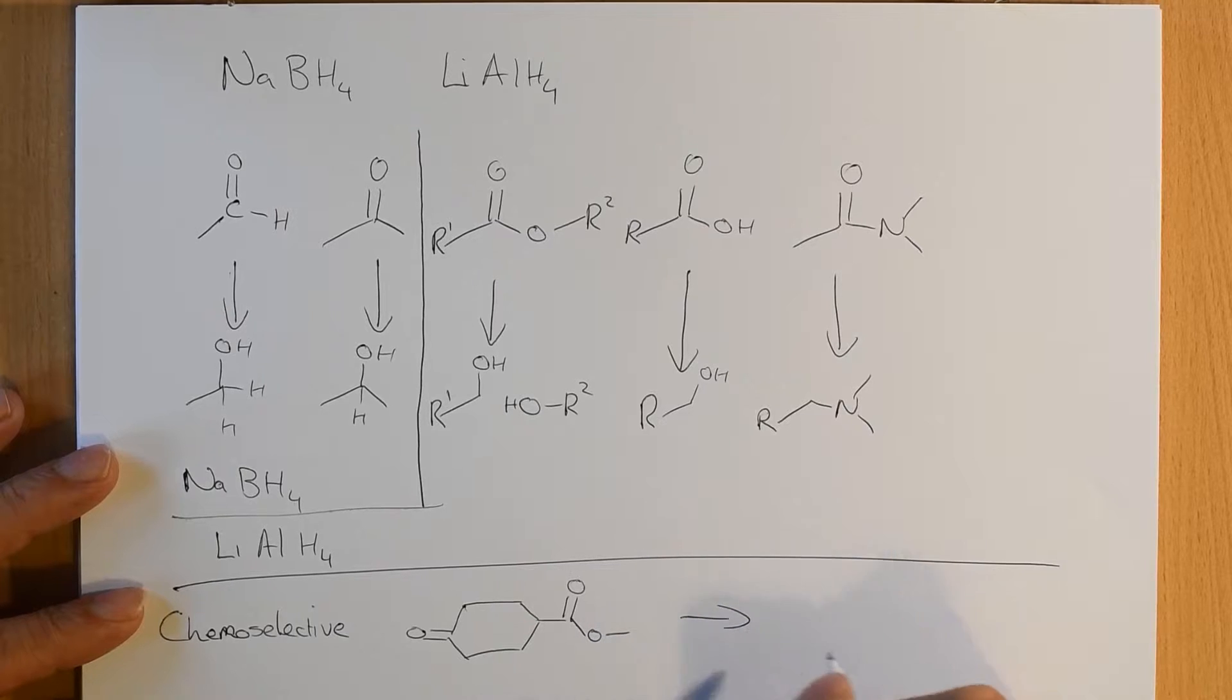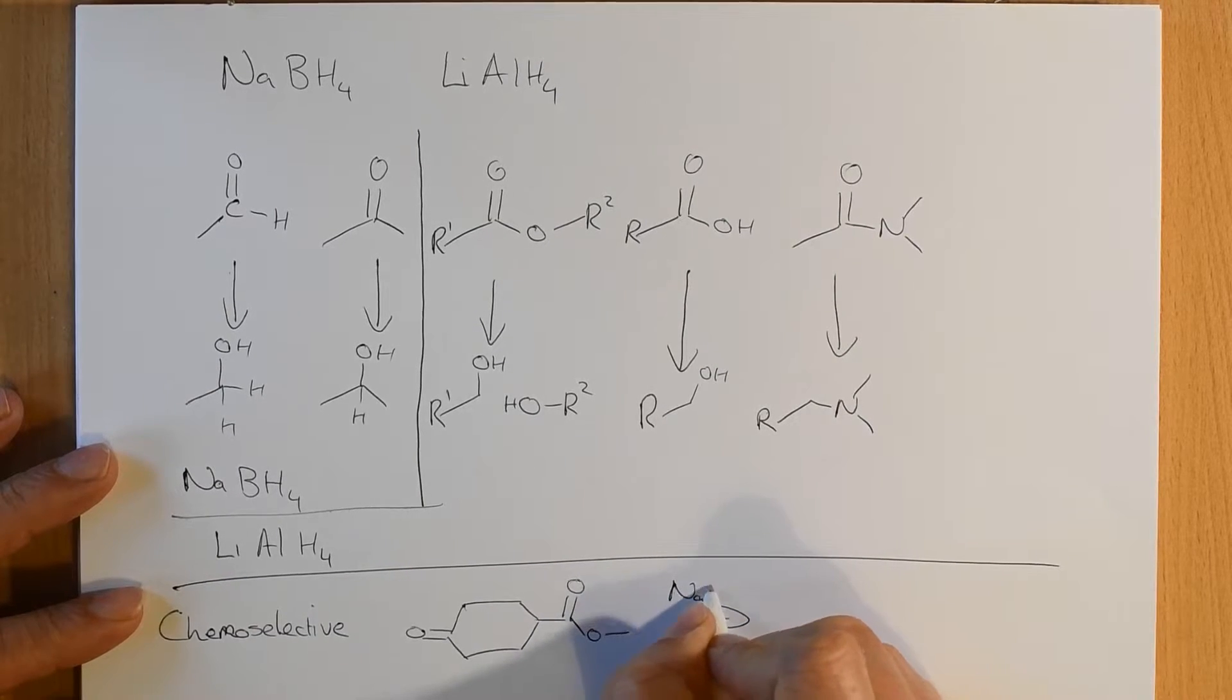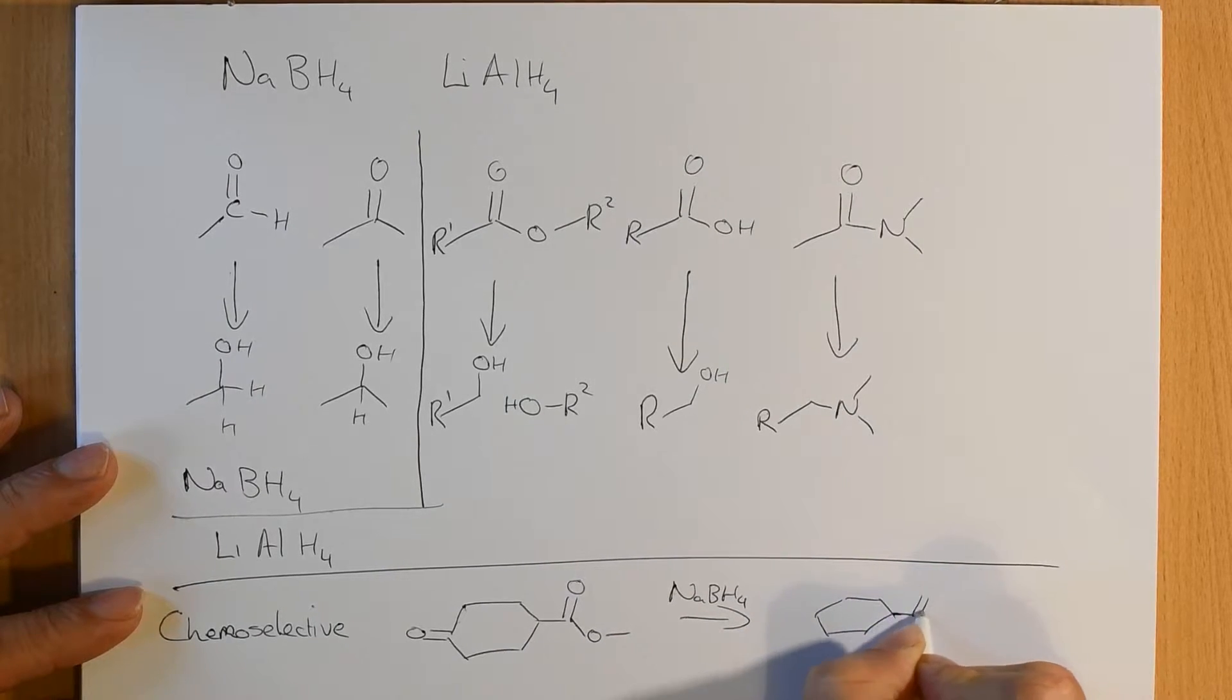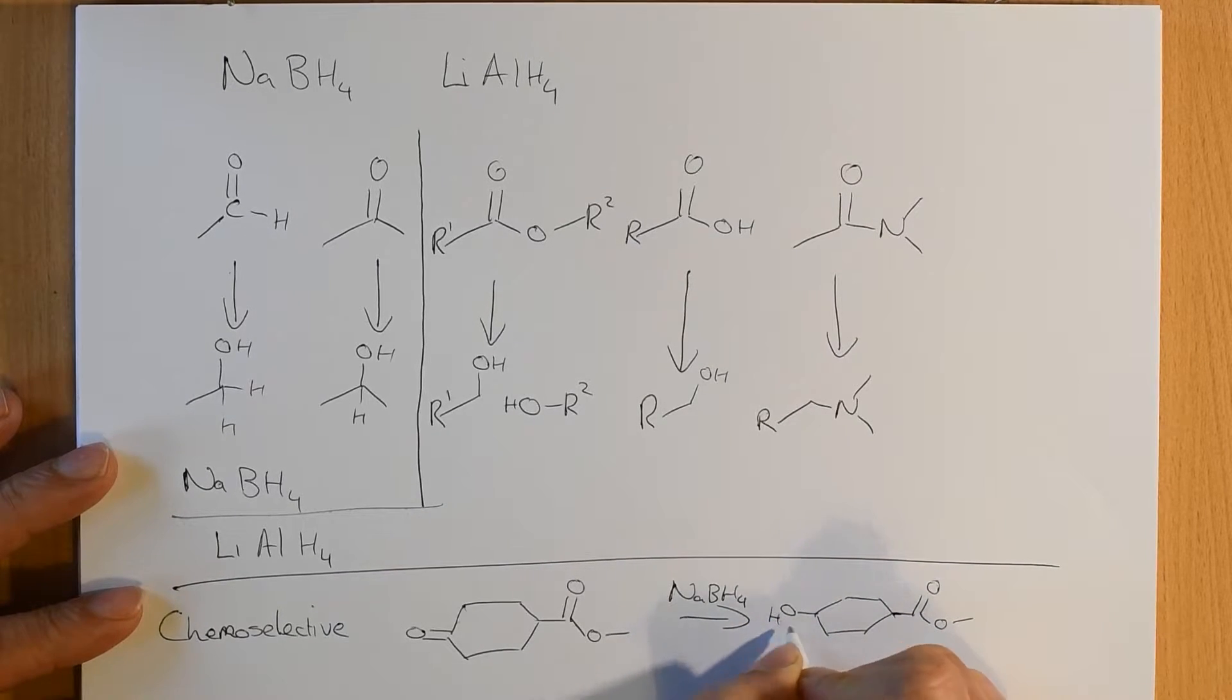If we treat it with sodium borohydride, we expect it to react chemoselectively, and it will reduce only the ketone and not the ester, in which case we would end up with the ester on one end and the alcohol on the other.